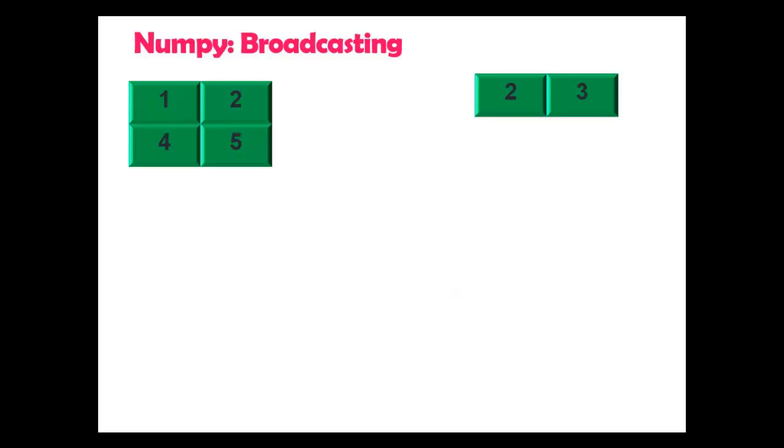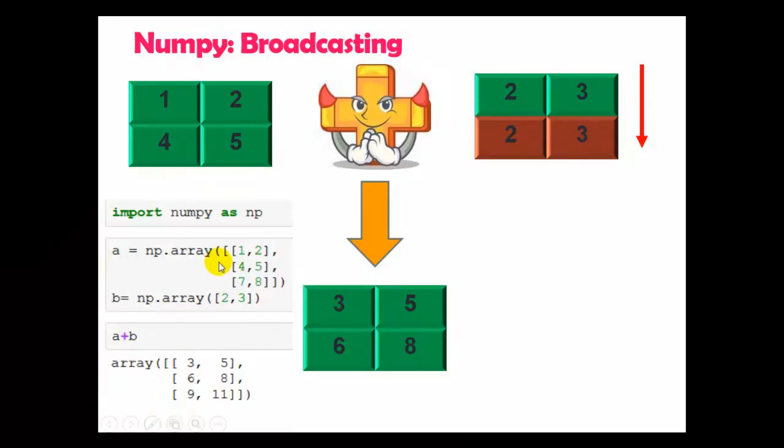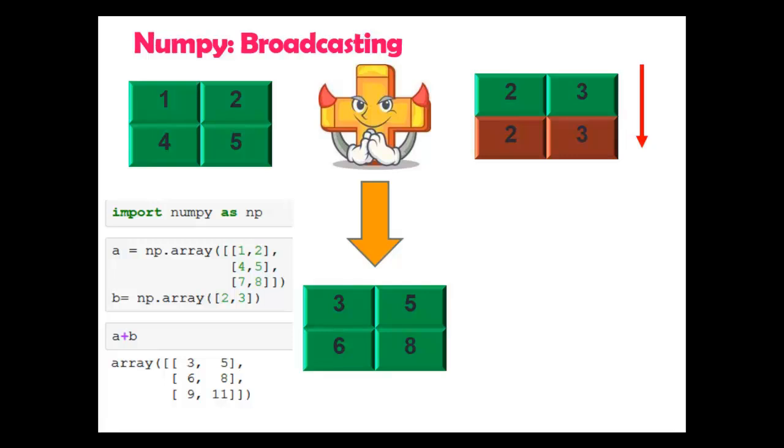Now here I have used 2D array and on the right side 1D array. Here just for teaching learning purpose I have stretched this value 2 and 3. The smaller array is broadcast to the size of the larger array so that they have compatible shapes. Here you can see B is 1D array, A is 2D array. So in this example B is broadcast to become compatible with A.